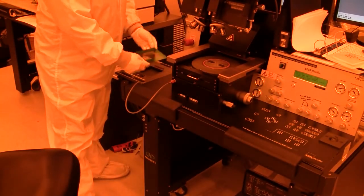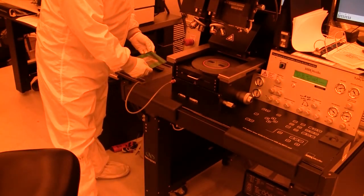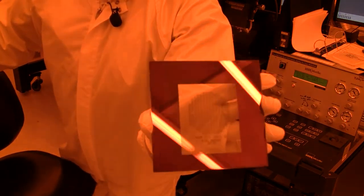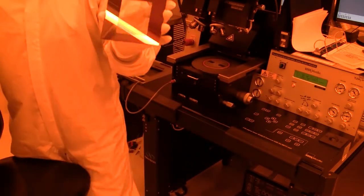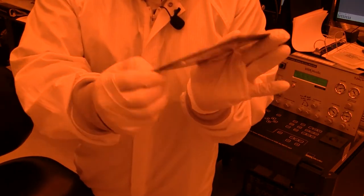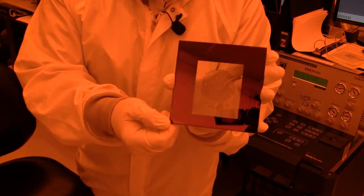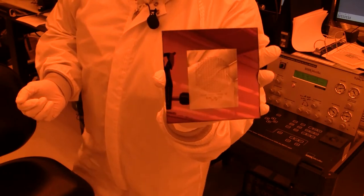So this is the mask holder. We want to make sure that the orientation is correct. The words are on the bottom, and there's a dark side and a shiny side. The dark side goes down - that's the oxidized chrome.